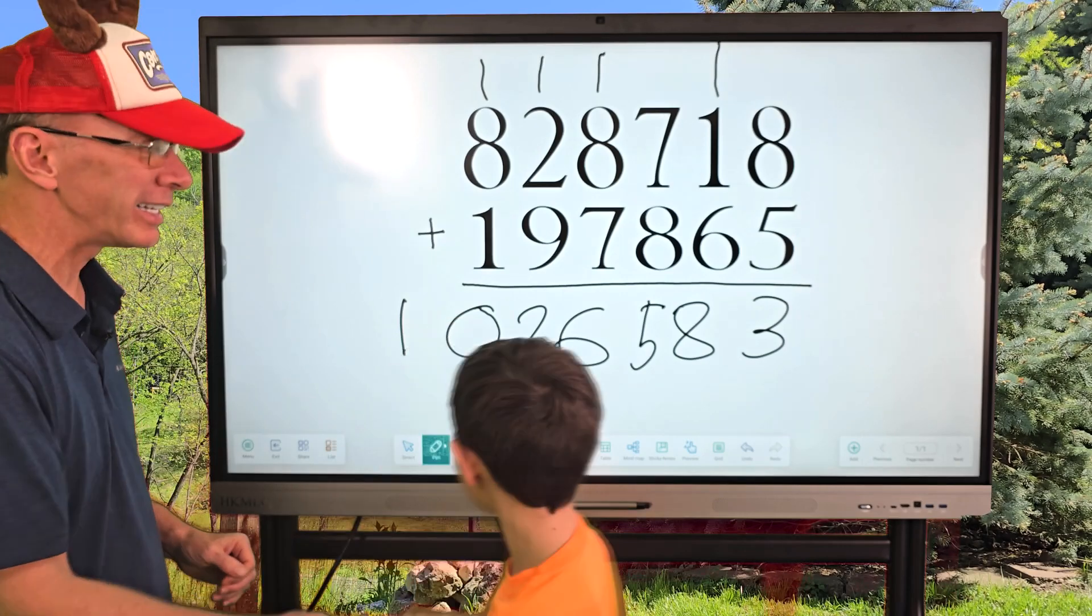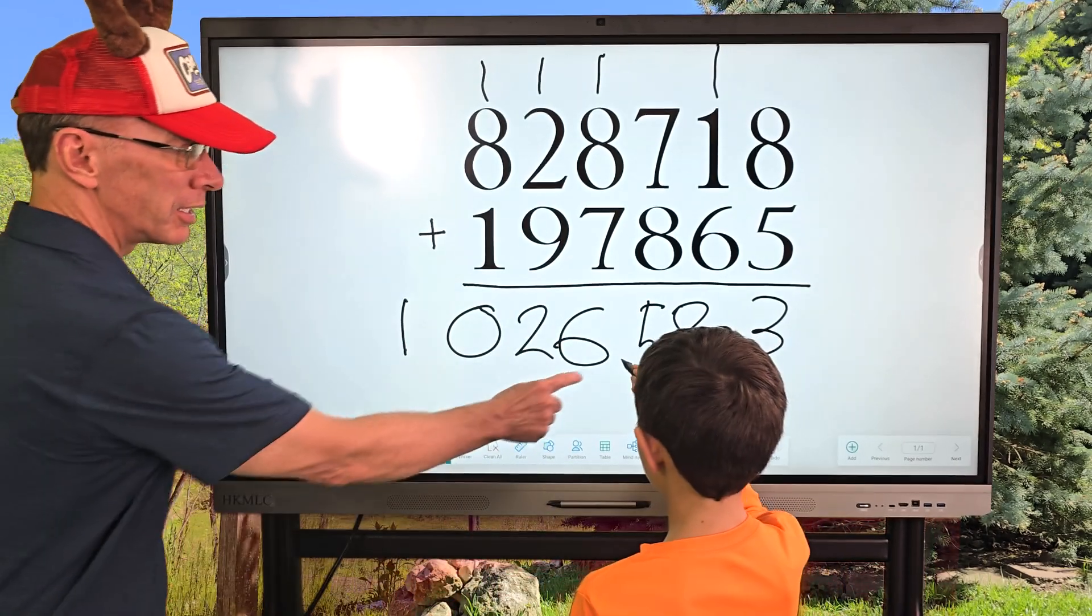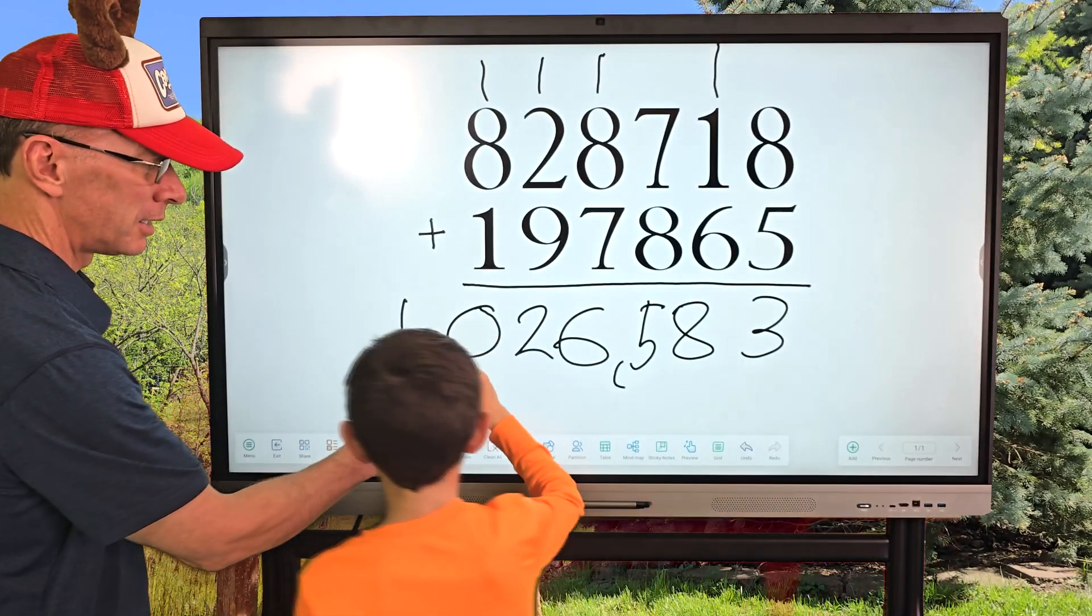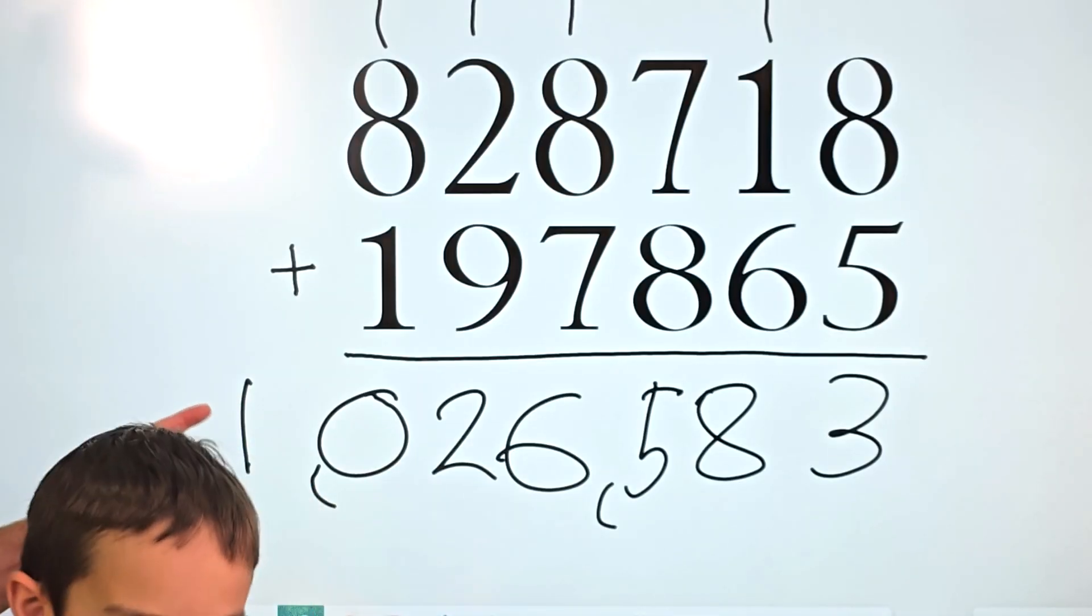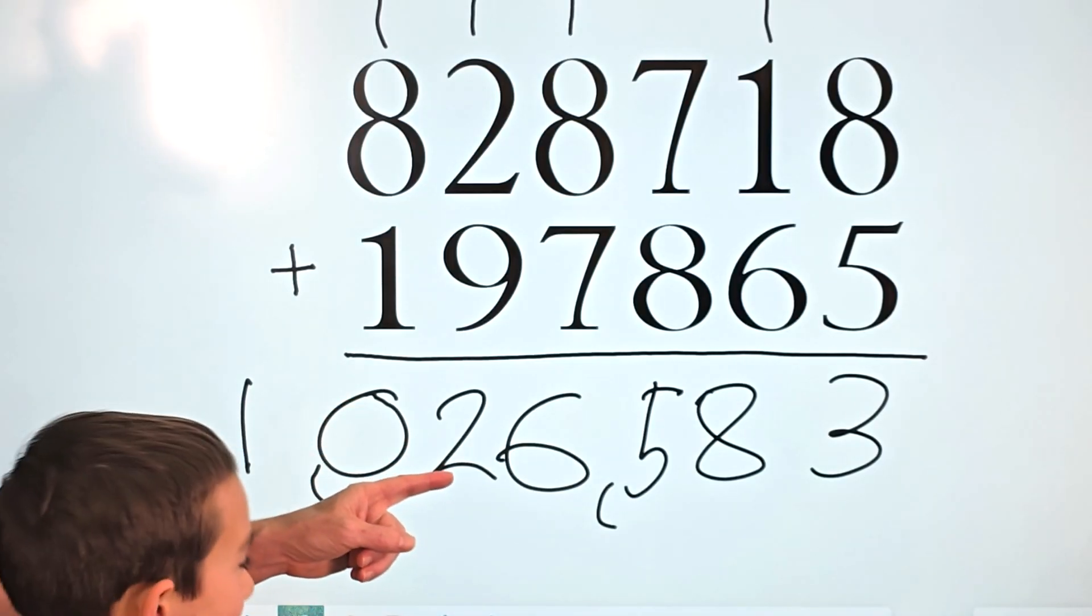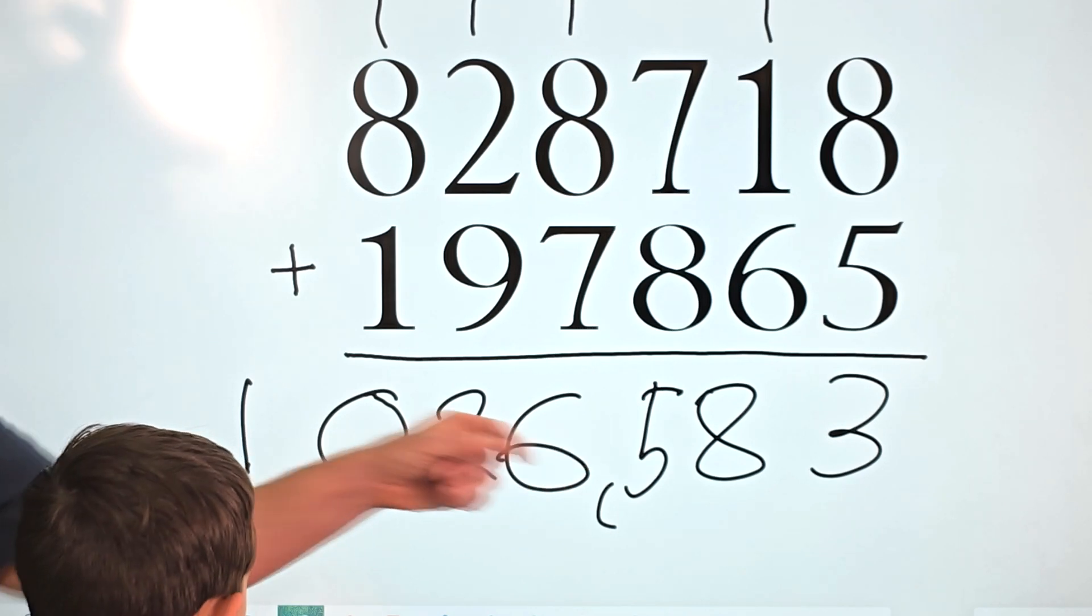Here, let's put some commas. We might have hit that million mark here. We did. We had 1,026,583.